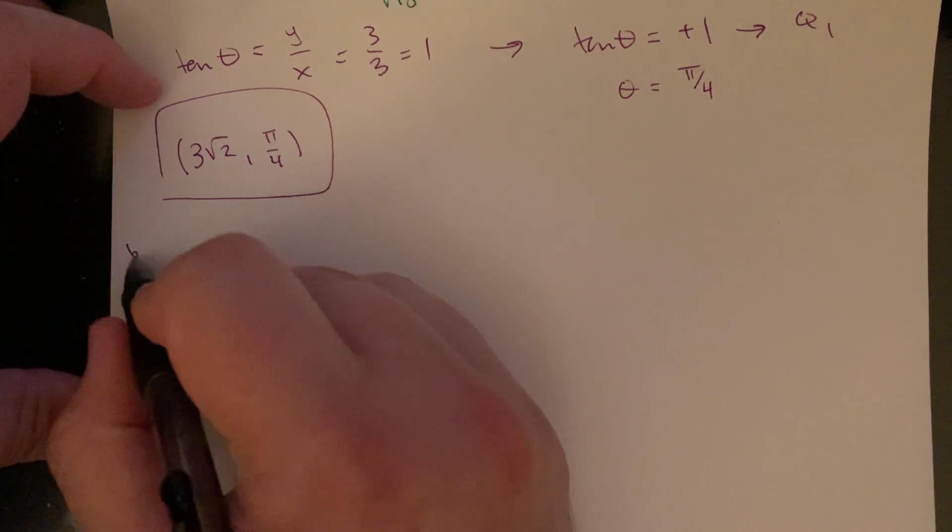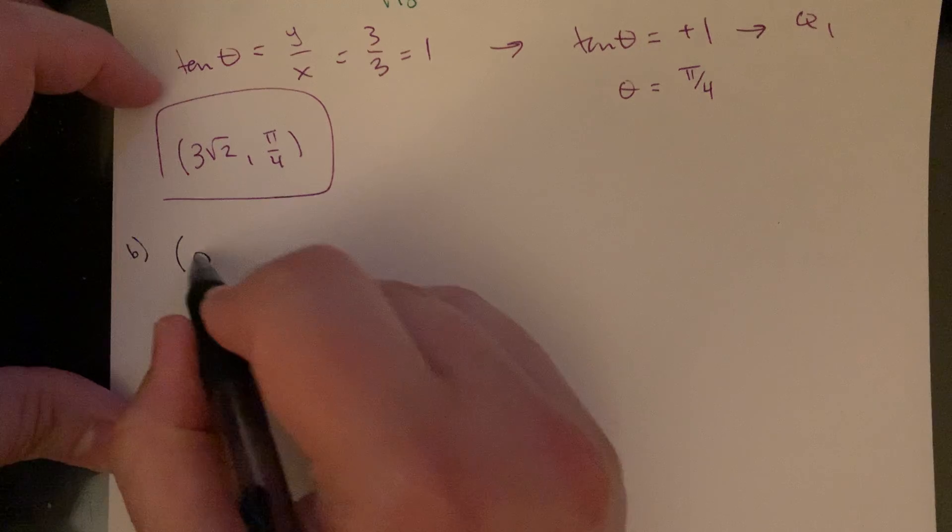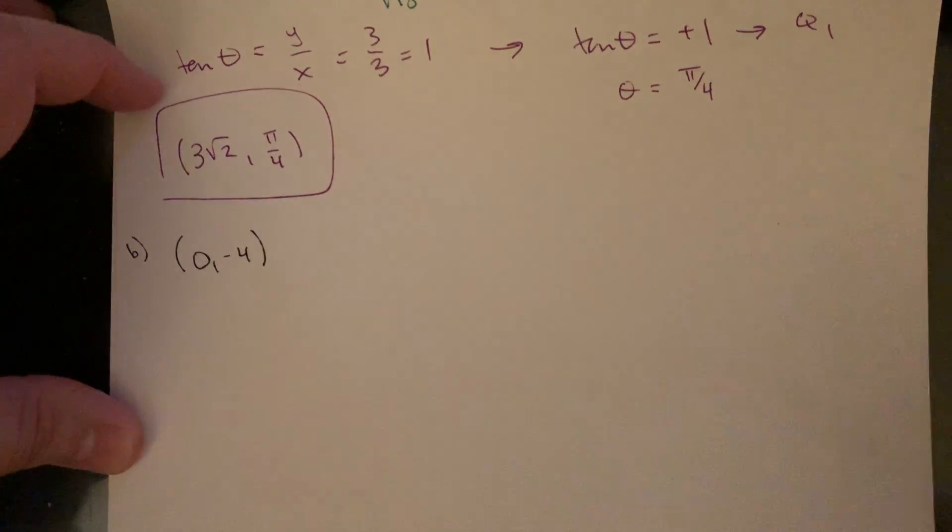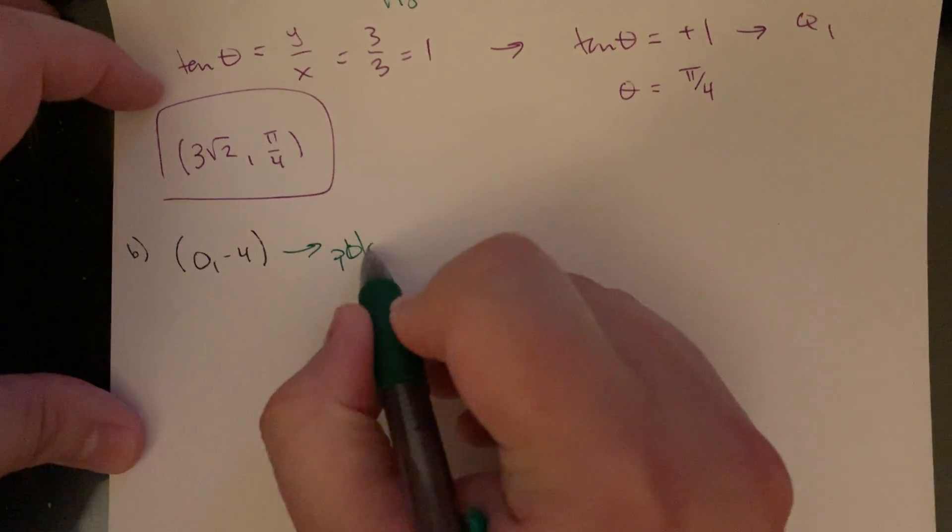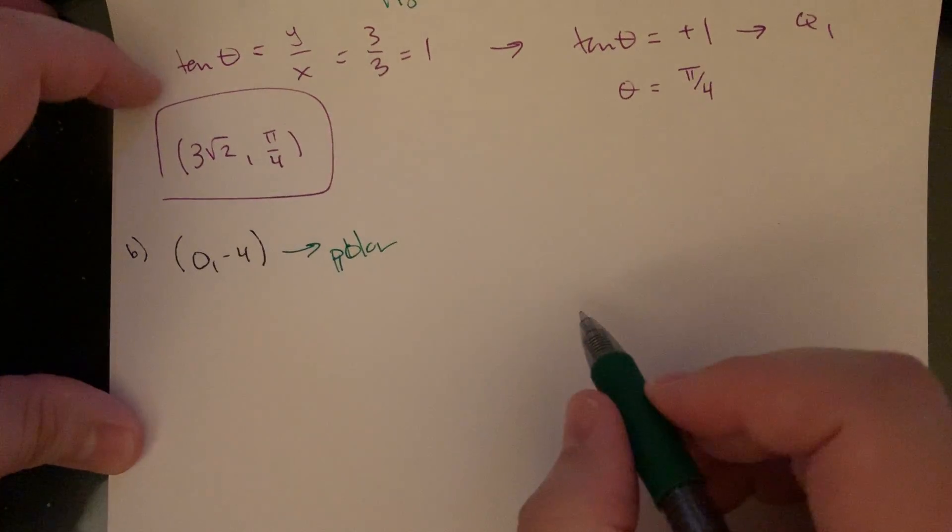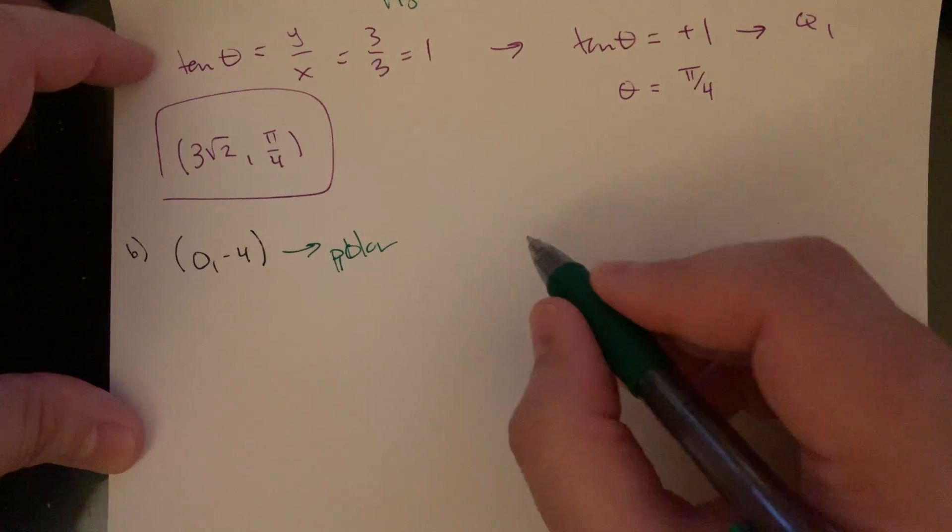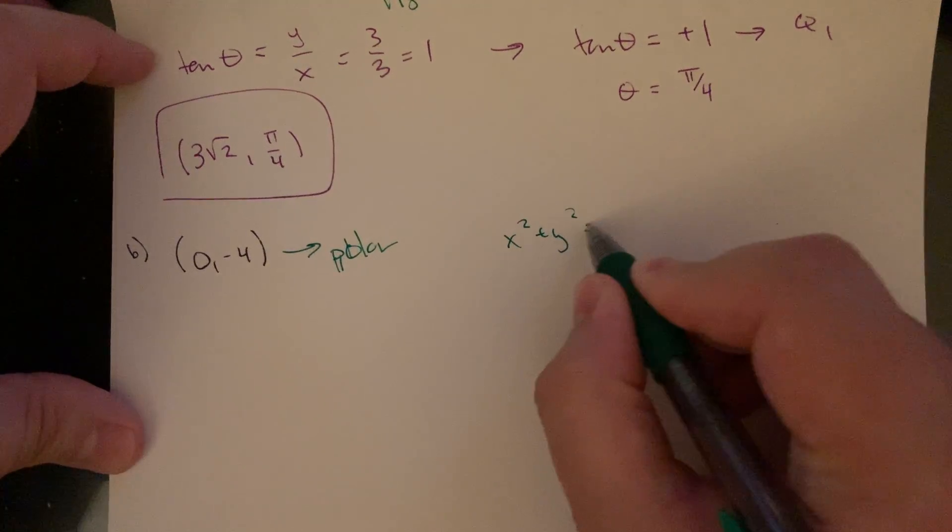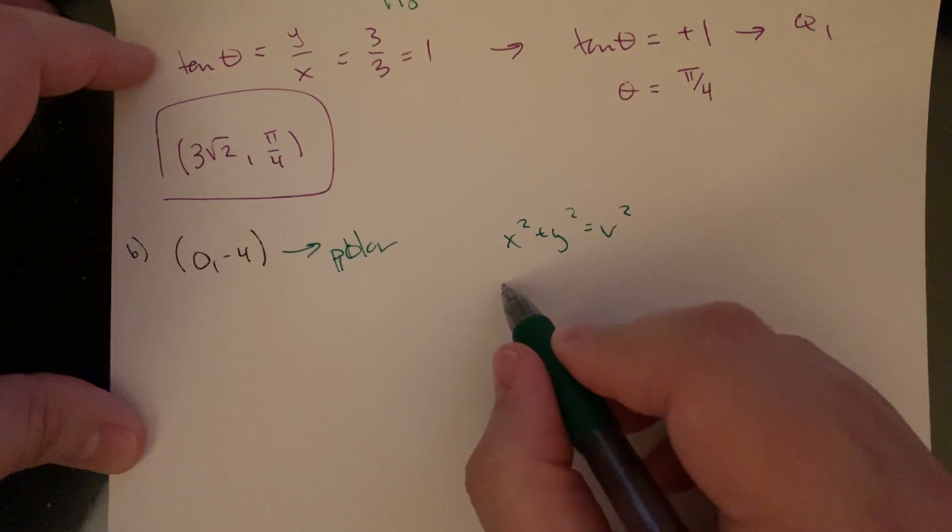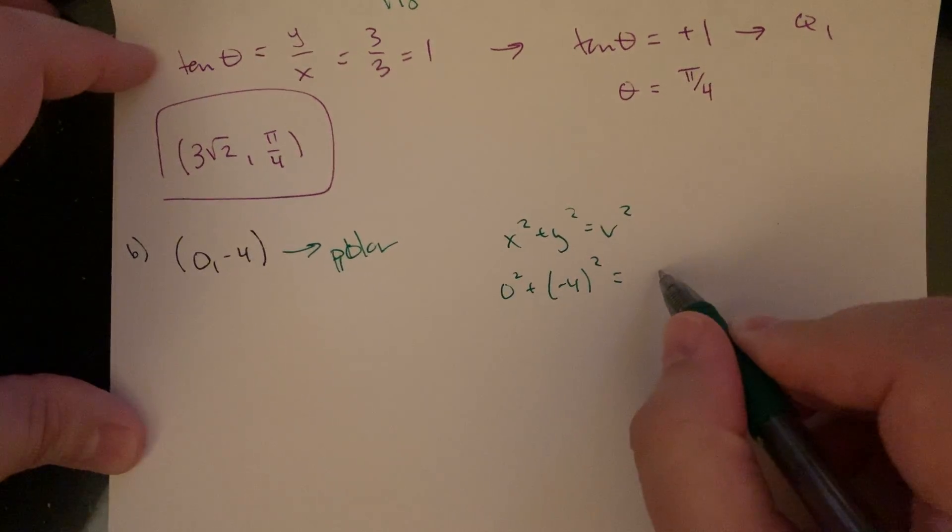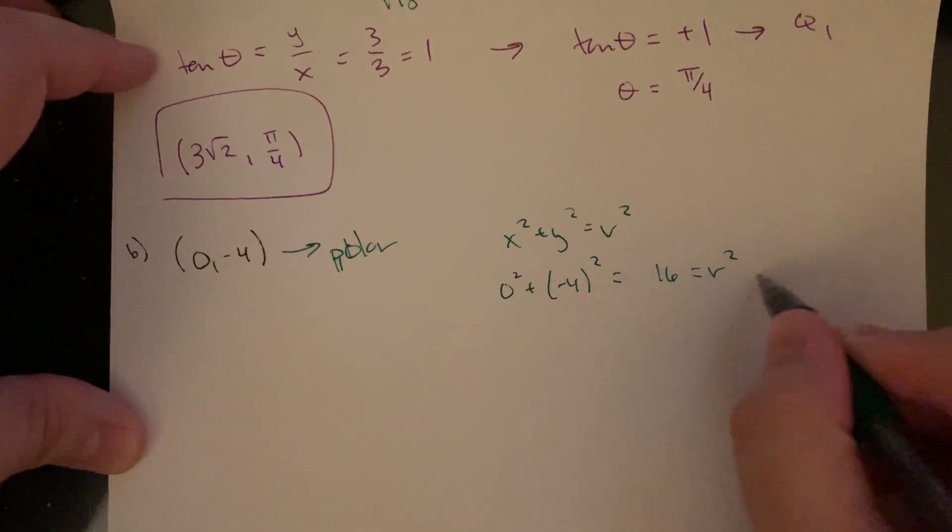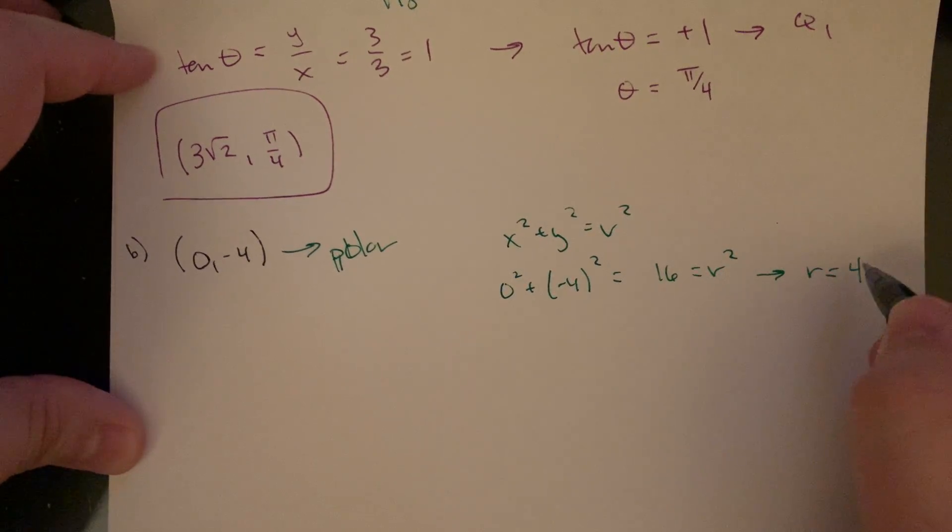Letter B. The value here, the coordinates in x, y is (0, negative 4). So same thing, convert it into polar. So x squared plus y squared is r squared. 0 squared plus negative 4 squared, so that's just going to be 16 is r squared. So that means my radius here is 4.